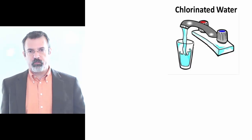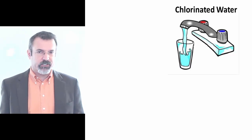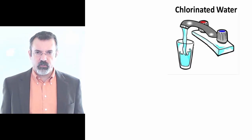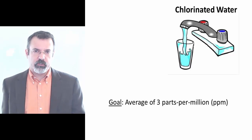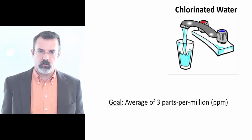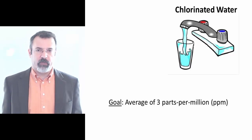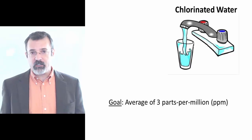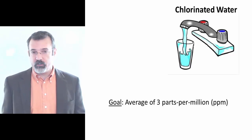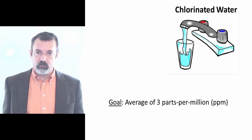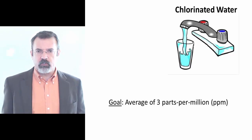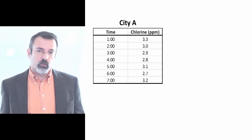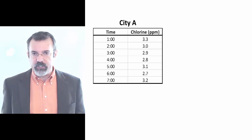Suppose we're concerned with producing clean drinking water. We put chlorine in the water. You need an average of three parts of chlorine per million parts of water to effectively kill harmful bacteria.